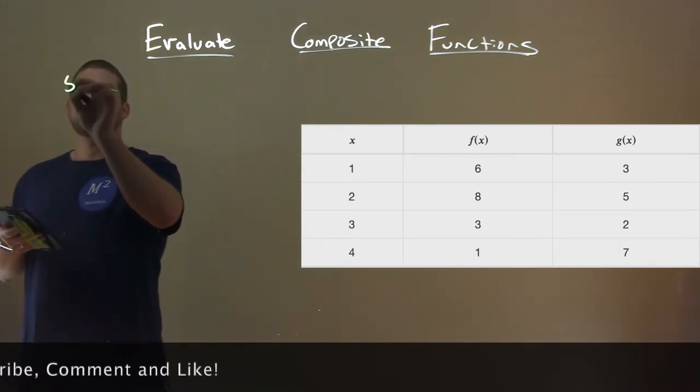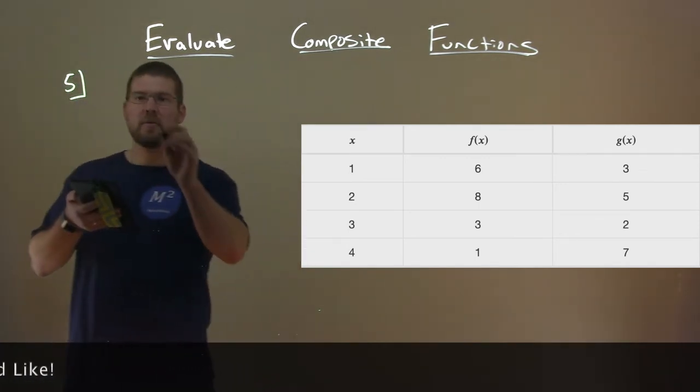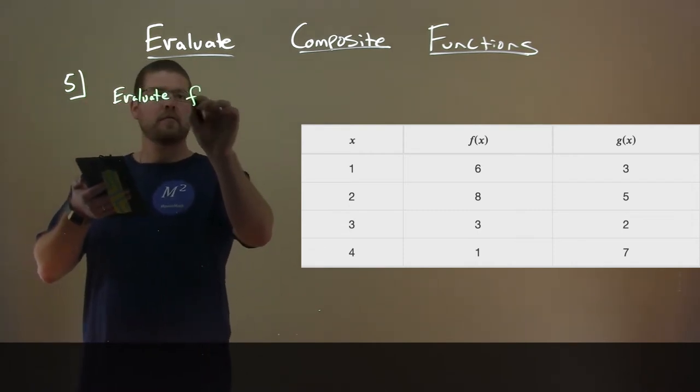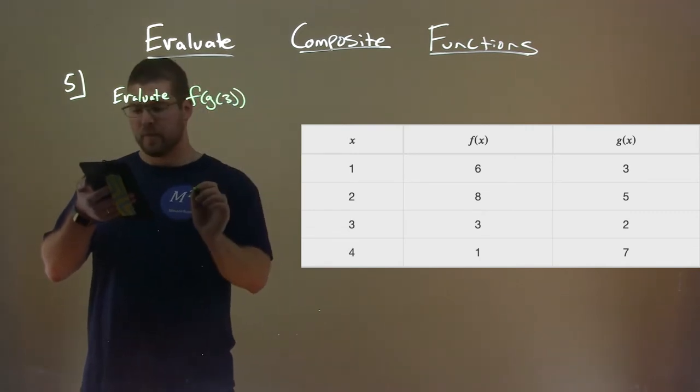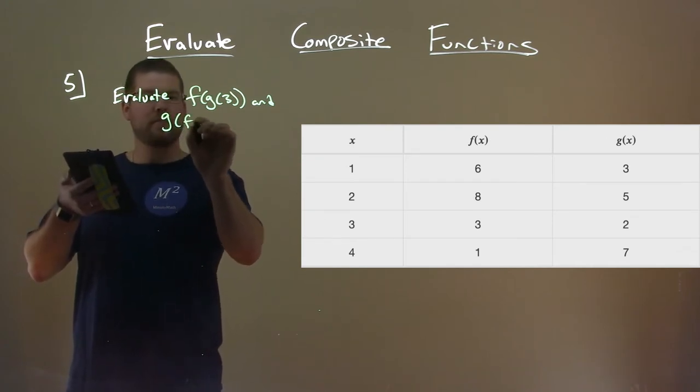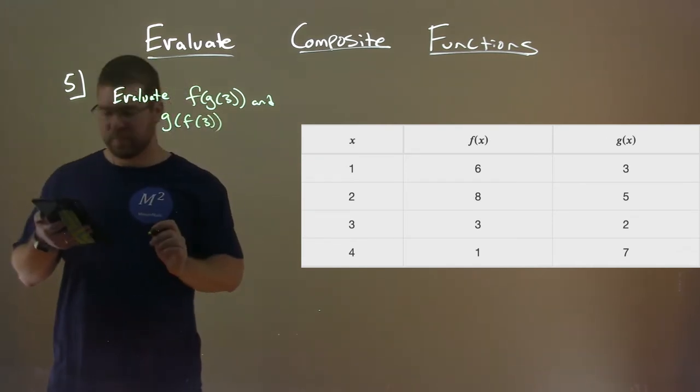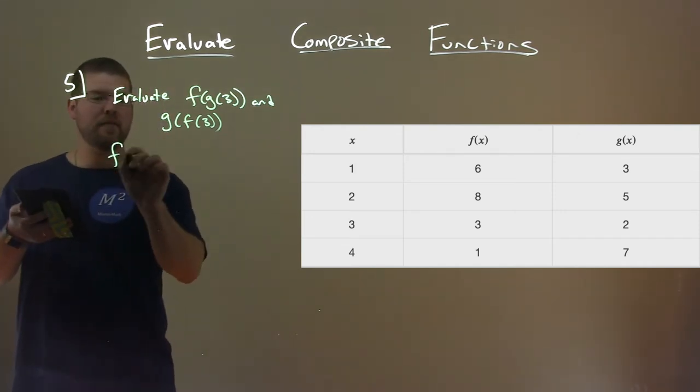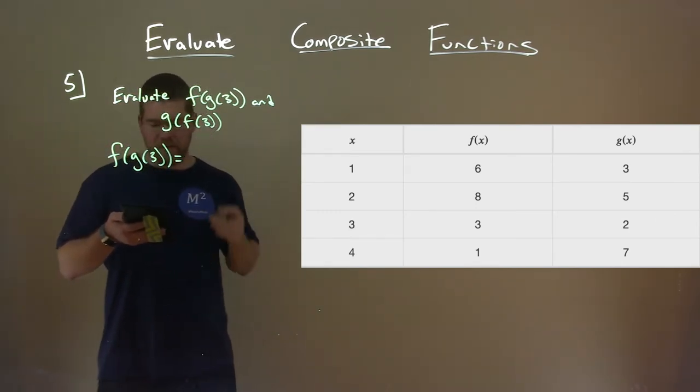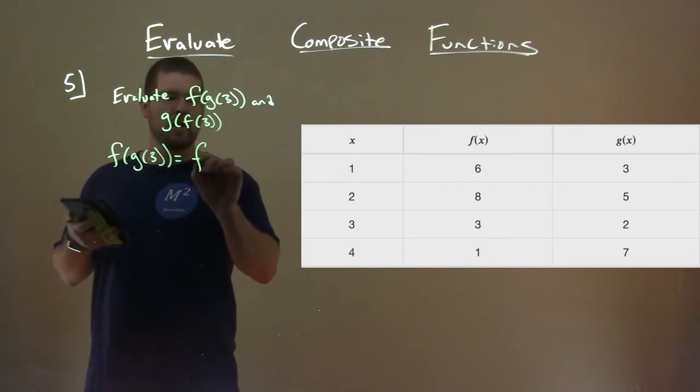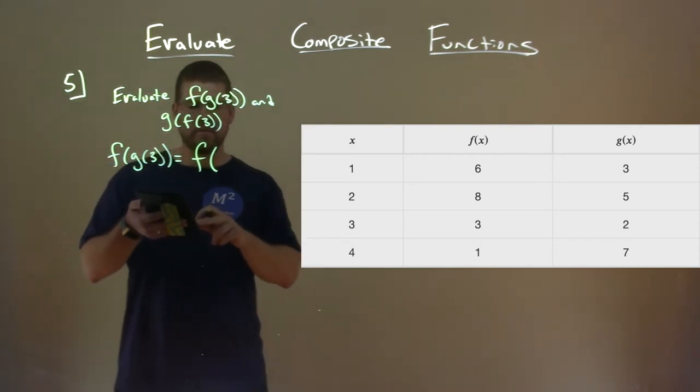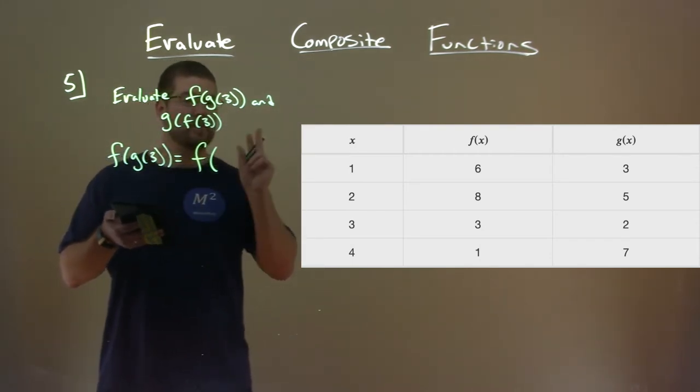So what we want to do here, we're going to evaluate what is f of g of 3 and g of f of 3. So the first part here, we want to find f of g of 3. Well, what's g of 3? 3 as for x, if it goes into g of x, so if x is 3, what's g of x? g of x is 2 there.